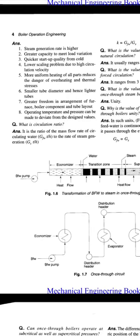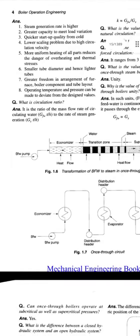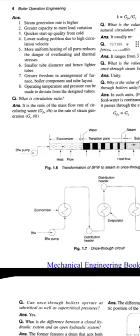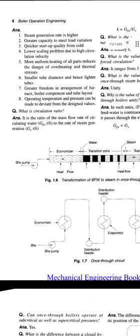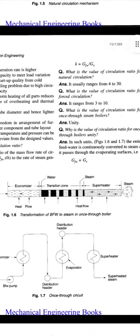This is the continuation of the first video. The question is: what is circulation ratio? It is the ratio of mass flow rate of circulating water to the rate of steam generation. G_FW is the rate of feed water and G_S is the rate of steam. So K equals G rate of feed water divided by G rate of steam.